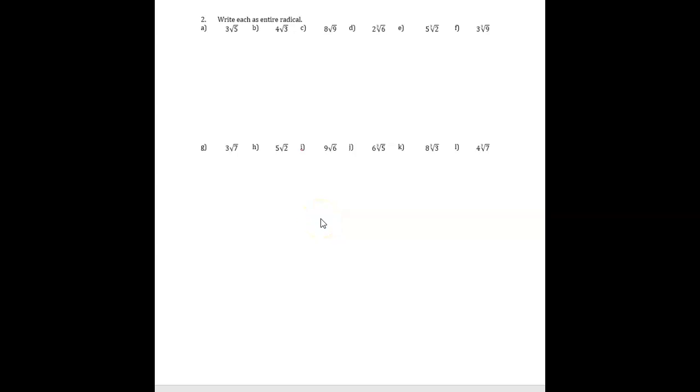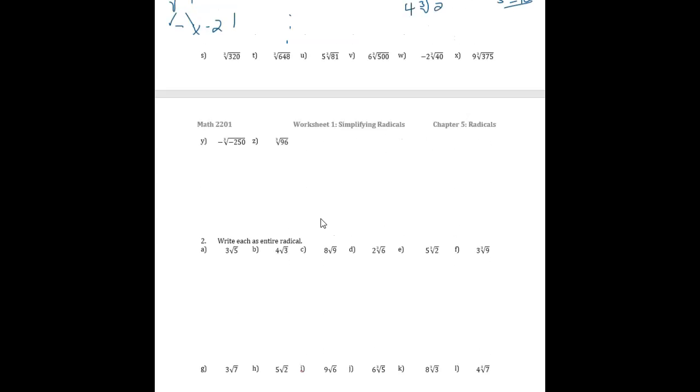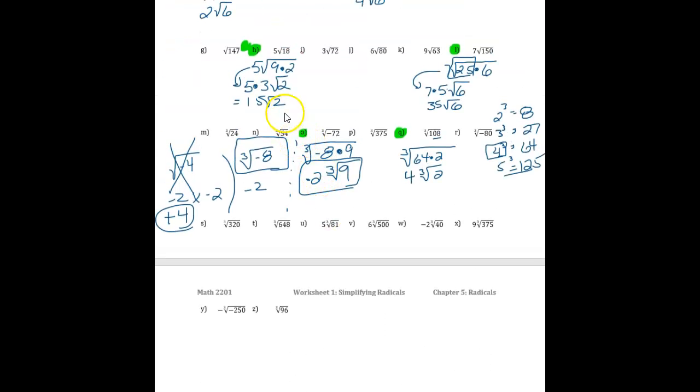So still part of Lesson 1 for Unit 5, and in this video we'll reverse the process we just looked at, where we took radicals and wrote them as mixed radicals. Here we want to go backwards. In other words, how do we take the work we've done here and come back to the original question?